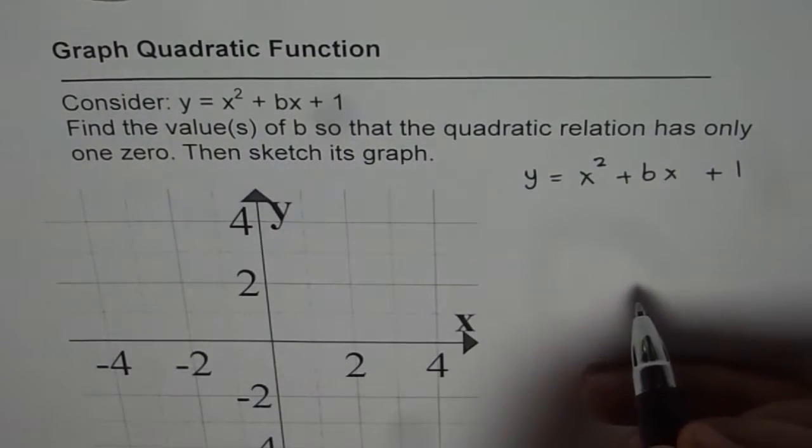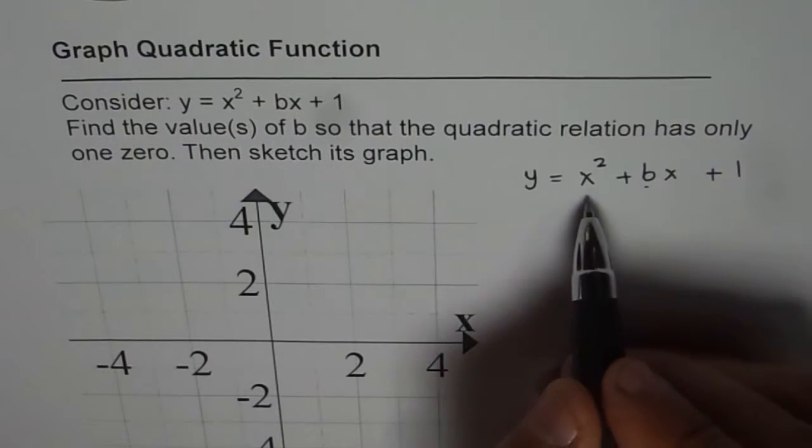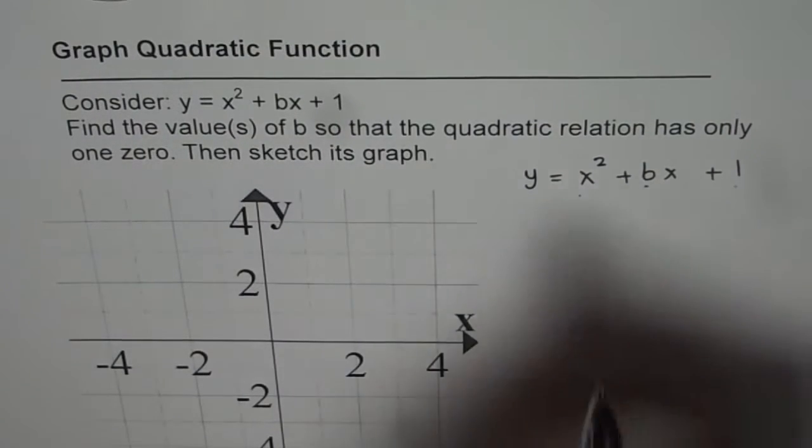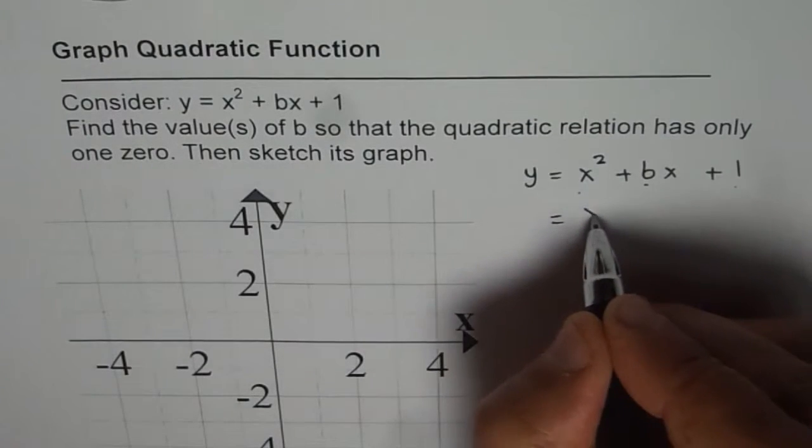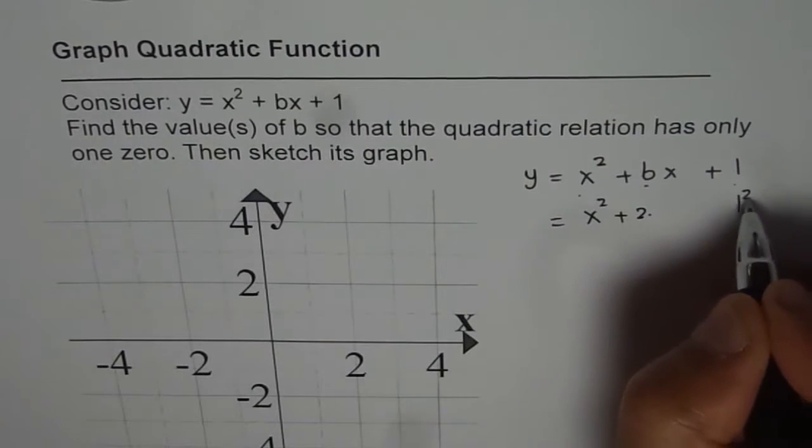Now if it is a perfect square, we are looking for a number in the center which should be 2 times ab. What I am trying to say is you write this as x squared plus 2 times, now 1 is 1 squared, right.